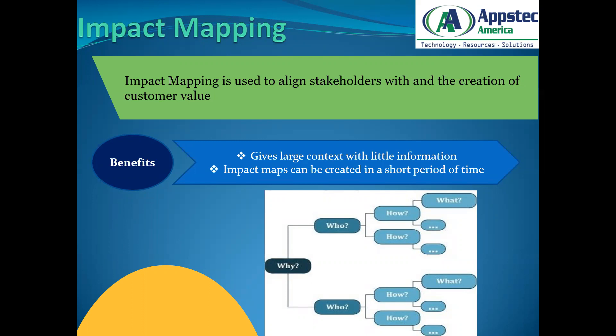Impact mapping is considered a lightweight collaborative planning technique for teams that want to understand the impact of the software or product they are trying to build. It is based on user interaction design, outcome-driven planning, and mind mapping. Impact maps help delivery teams and stakeholders visualize the roadmap, explain how deliverables connect to user needs, and communicate how user outcomes relate to organizational goals — which can include customer satisfaction (CSAT) targets, not just revenue.